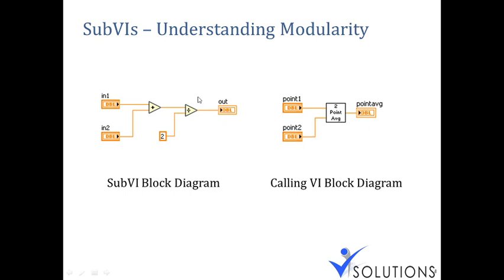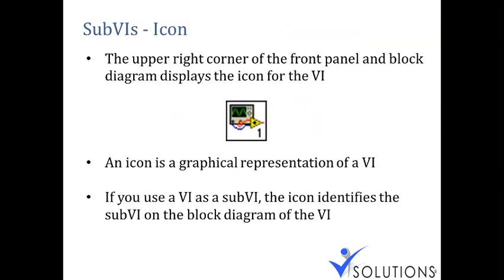You can see this part of code is converted into a SubVI — the values are still passed inside and the output is taken out. Whatever the SubVI contains internally holds the same logic as the original block diagram. To create a SubVI, you need two things: an icon and a connector pane.